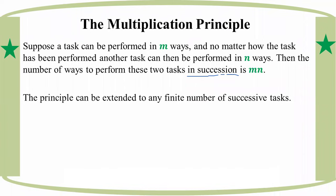This is the multiplication principle — also called the counting principle. Probability is based on the number of possible outcomes. In this case, the probability will be determined using these counting principles.